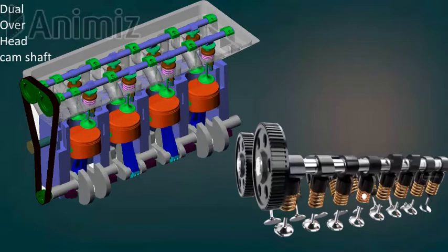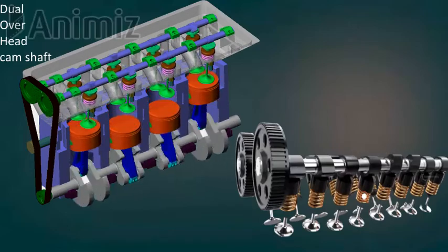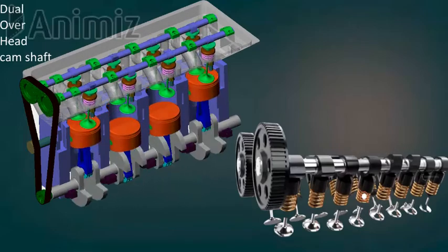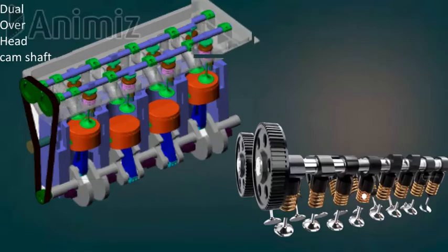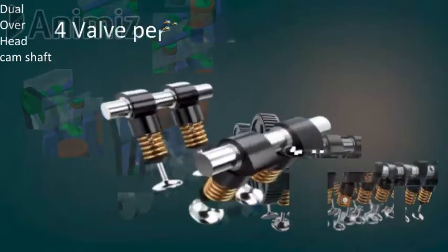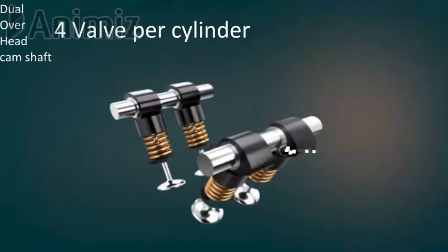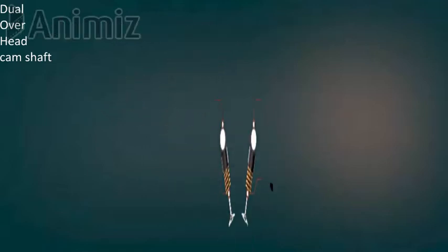The Dual Overhead Camshaft uses four valves per cylinder — two intake and two exhaust. The intake and exhaust volume is greatly improved in this configuration.